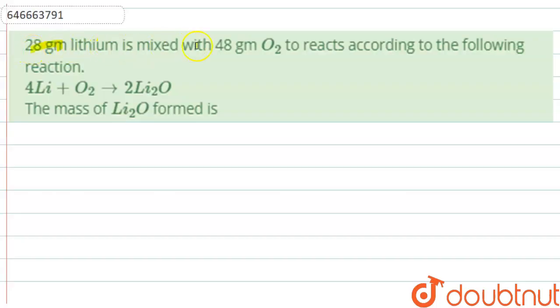The question is: 28 grams of lithium is mixed with 48 grams of O₂ to react according to the following reaction: 4Li + O₂ → 2Li₂O. We have to find the mass of Li₂O formed.